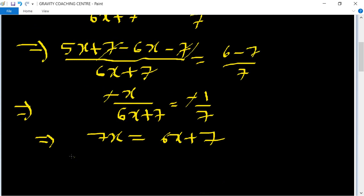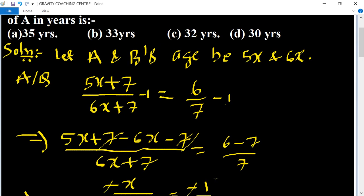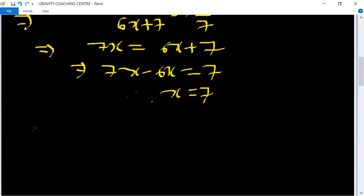Therefore x equals 7. So the present age equals 5x,